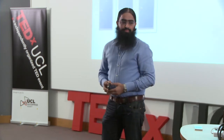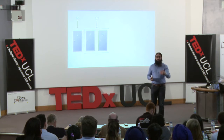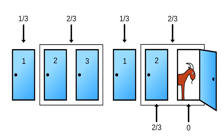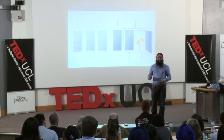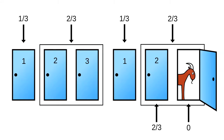Let me explain this. If you assume that your initial chance of winning the car by choosing door number one was one in three — which is fairly reasonable — then the chance of the car being behind door two or three is two in three. By showing you that there's a goat behind door number three, all the probability of doors two and three is compounded into just door number two. So you would have had a higher chance of winning the car if you had switched.